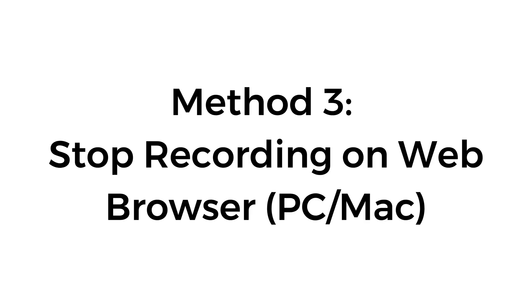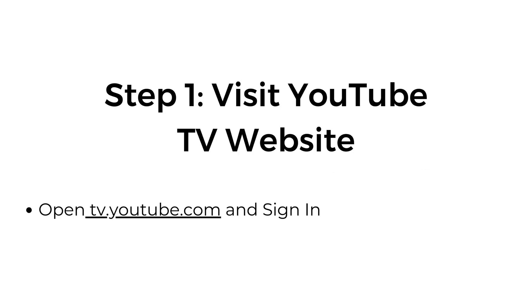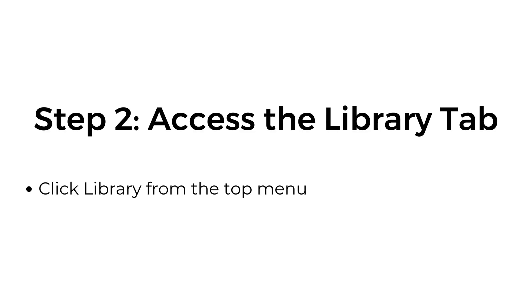Method number three: stop recording on a web browser. Step one, visit the YouTube TV website — open tv.youtube.com and sign in. Step two, access the library tab — click library from the top menu.